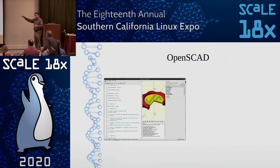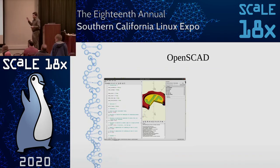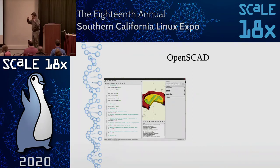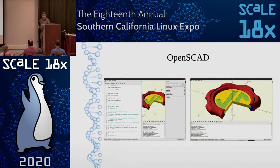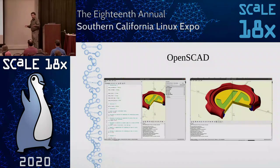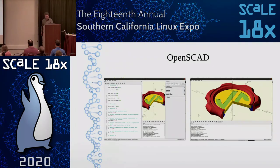When you bring up OpenSCAD, the interface has a code editor on the left, a customizer on the right, a 3D view in the middle top, and output including debug and errors below. I personally say hide the left and right pane, hide the editor, hide the customizer, and just use the 3D view—alt-tab back and forth to your preferred code editor. The editor in OpenSCAD is functional, but if you're comfortable with something else, switch in and out.